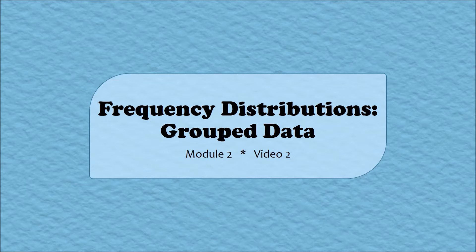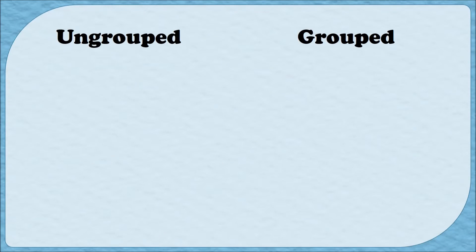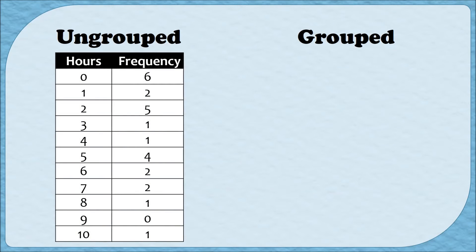To illustrate the difference between the two, let's look at a quick example. In the previous video, we looked at this frequency distribution. This is considered an ungrouped frequency distribution because if I look at each of the categories — those would be the numbers of hours — each category only lists one hour. So we know how many people read for zero hours, how many people read for three hours, for seven, for five. So if I have any individual number of hours, I can see how many people read for that many hours.